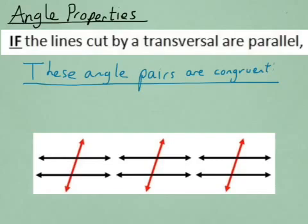We represent this in the picture by drawing an extra arrow on both of the lines. That extra arrow is symbolic to mean that those two lines are parallel. If the lines cut by a transversal are parallel, then three specific kinds of angle pairs are congruent.